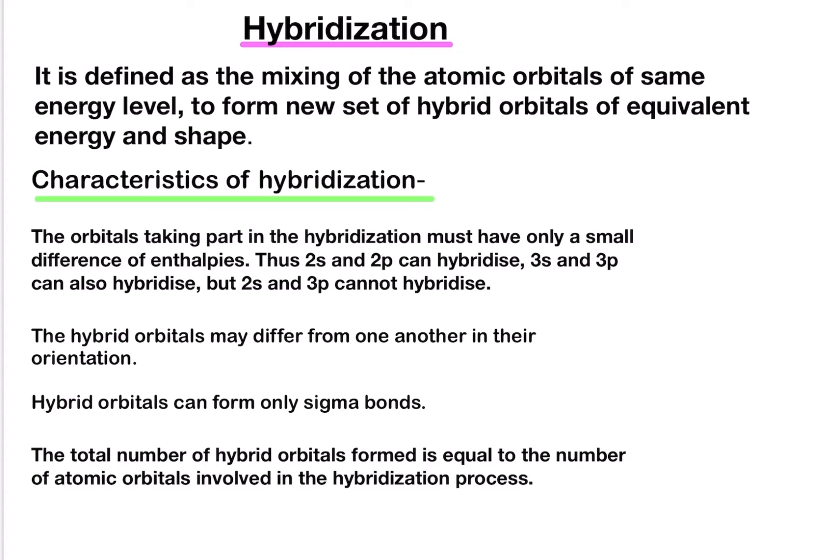So what is hybridization? Hybridization is defined as the mixing of the atomic orbitals of the same energy level to form new sets of hybrid orbitals of equivalent energy and shape. The characteristics of hybridization: the orbitals taking part in hybridization must have only a small difference in enthalpies. Thus 2s and 2p can hybridize, 3s and 3p can also hybridize, but 2s and 3p cannot hybridize.